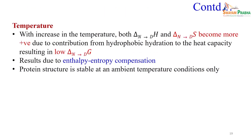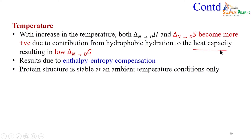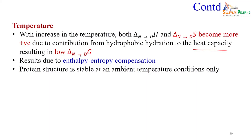Regarding temperature: both enthalpy and entropy are functions of heat capacity C_p. Increasing temperature increases heat capacity, changing both enthalpy and entropy — this is enthalpy-entropy compensation. Because of this, ΔG changes, and if ΔG (native→unfolded) becomes negative, it leads to unfolding or denaturation. Protein structure is stable only over a narrow temperature range close to ambient temperature; both very low and very high temperatures can cause unfolding.